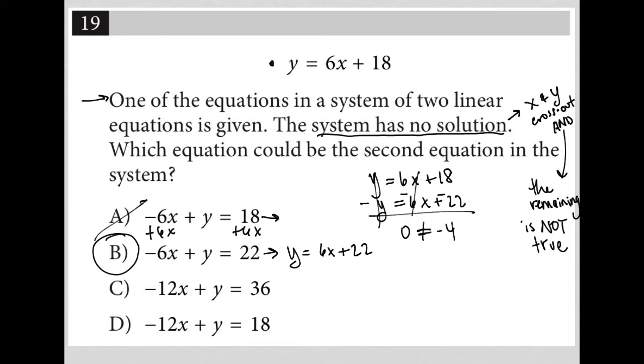Why? Because x and y crossed out, and the remaining was not true. And just to show you what would happen with choice C and why choice C is not the correct answer,